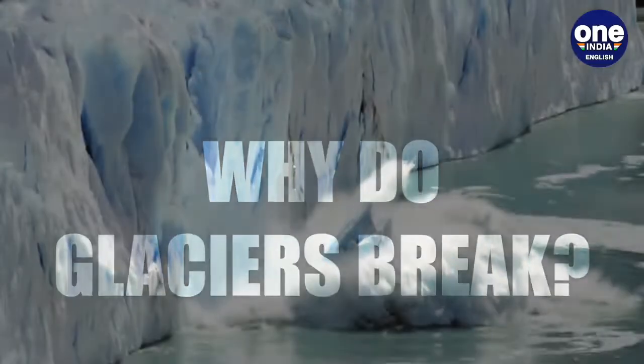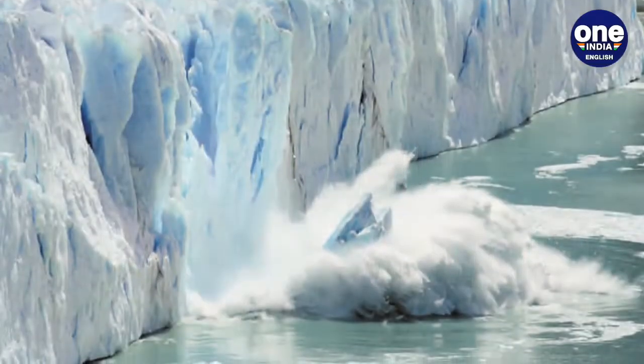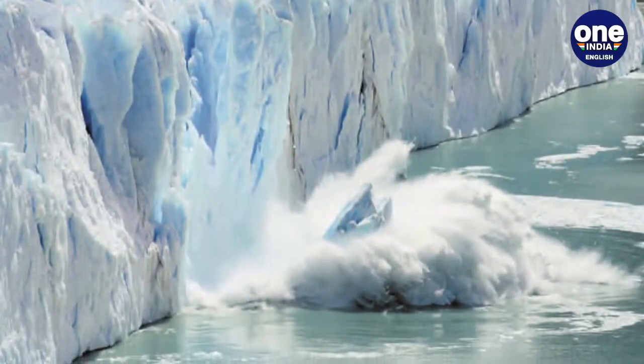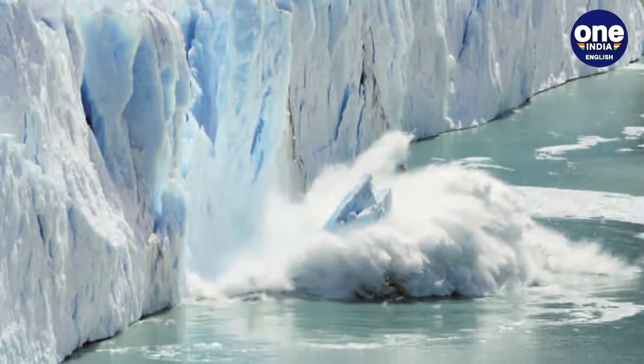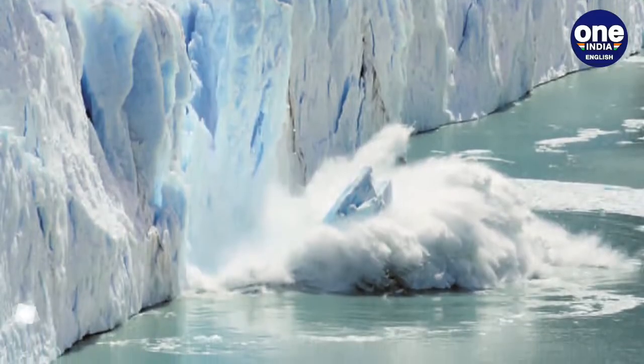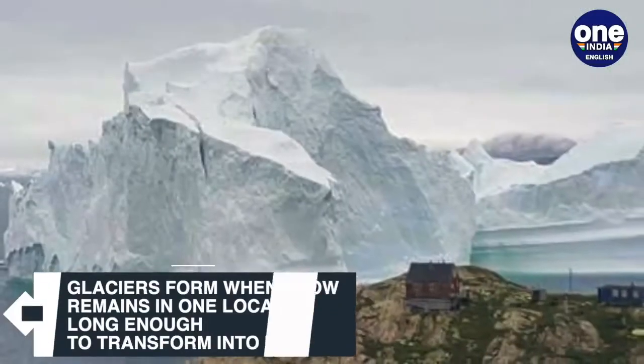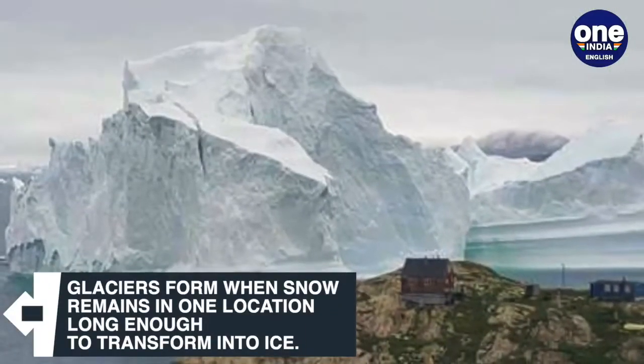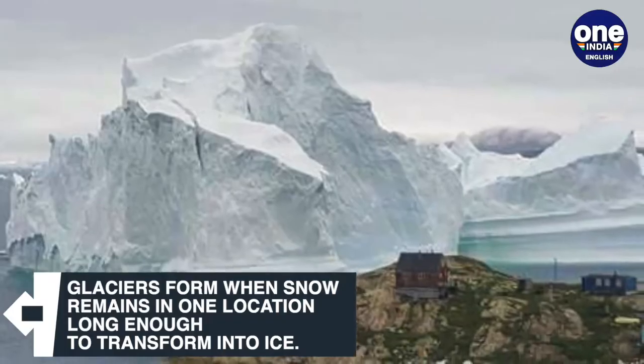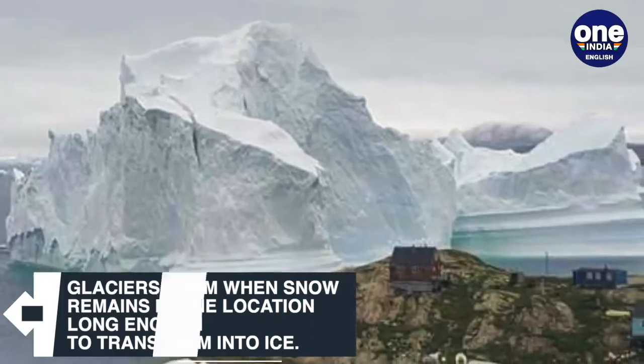Glaciers are made up of fallen snow that over many years compresses into large, thickened ice masses. Glaciers form when snow remains in one location long enough to transform into ice.